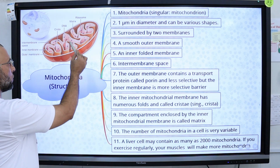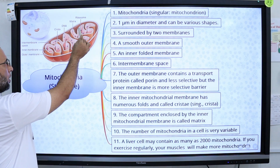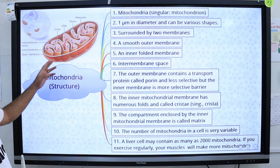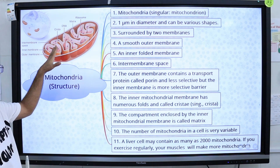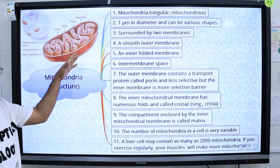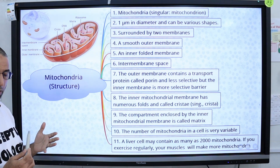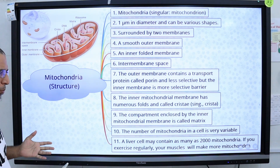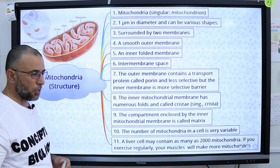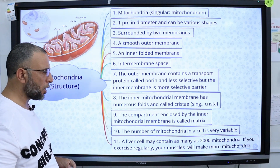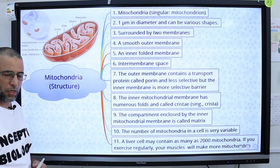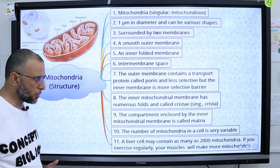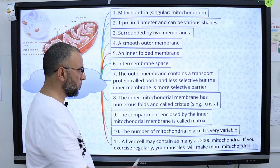The compartment enclosed by the inner mitochondrial membrane is called the mitochondrial matrix. Inside the mitochondrial matrix, ribosomes and DNA are present. These ribosomes present in the mitochondrial matrix are called bacterial ribosomes or prokaryotic ribosomes. The number of mitochondria in a cell varies — a liver cell may contain as many as 2000 mitochondria, and during exercise our muscles can make more mitochondria.